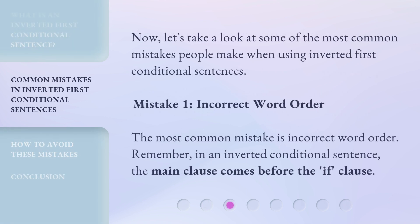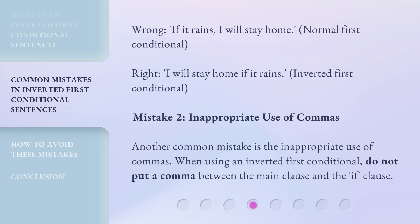Now let's take a look at some of the most common mistakes people make when using inverted first conditional sentences. Mistake 1: Incorrect word order. The most common mistake is incorrect word order. Remember, in an inverted conditional sentence, the main clause comes before the if clause. Wrong: 'If it rains, I will stay home.' (normal first conditional) Right: 'I will stay home if it rains.' (inverted first conditional)